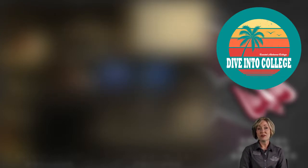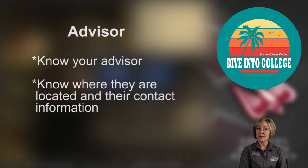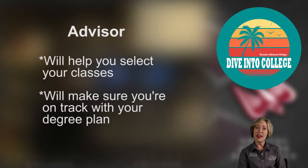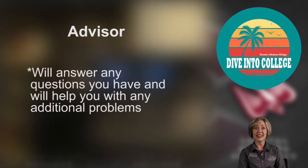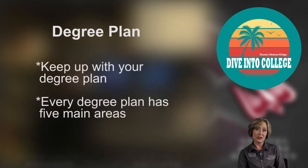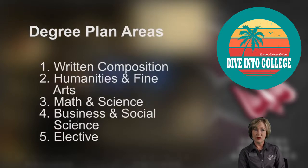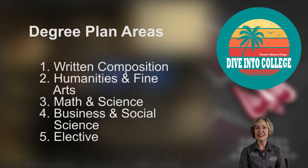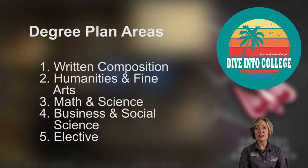One of the first things to do when you come to Coastal Alabama, other than go to class, is to find your advisor and talk with them about your course schedule and classes. If you don't know who your advisor is, access your degree plan in your MyCA account — your advisor's name is near the top. Your degree plan is divided into five areas: Area 1 is written composition, Area 2 is humanities and fine arts, Area 3 is math and science, Area 4 is social sciences, and Area 5 is electives. All of those courses together will help you meet your academic goals at Coastal Alabama.